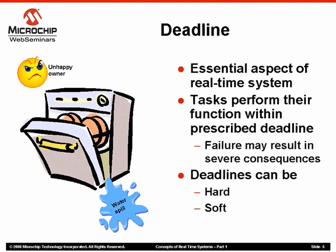When the deadlines are absolute, the real-time system is called a hard real-time system. The tasks in a hard real-time system are governed by rigid time constraints. When the deadlines are relaxed, a real-time system is called a soft real-time system. The tasks in a soft real-time system do not have rigid time constraints. The deadline for the water manager task in the scenario mentioned above should be absolute. Otherwise, the probability of spilling the water would be quite high, resulting in many unhappy dishwasher owners with frequent wet floors.